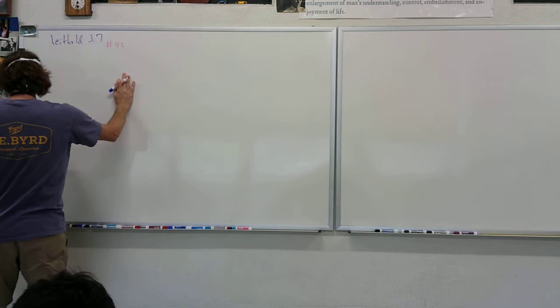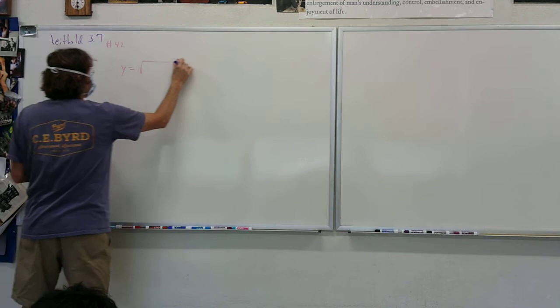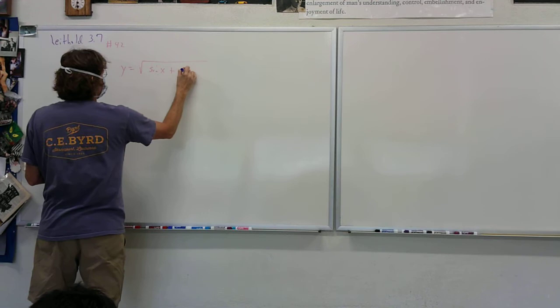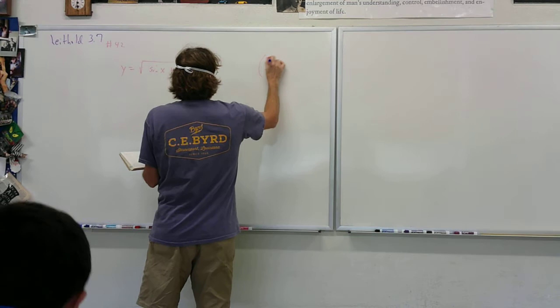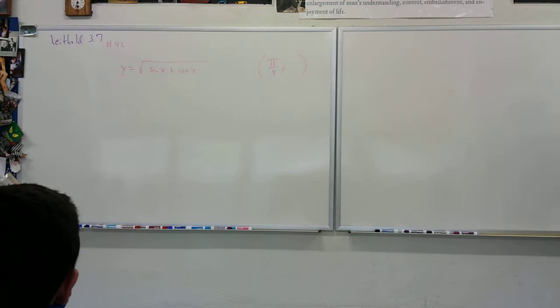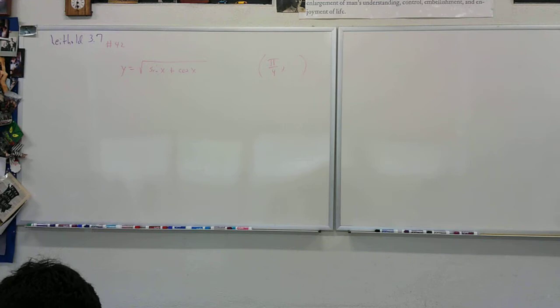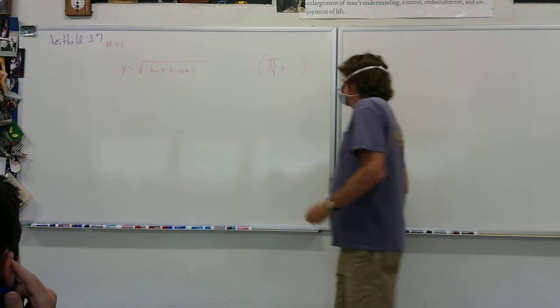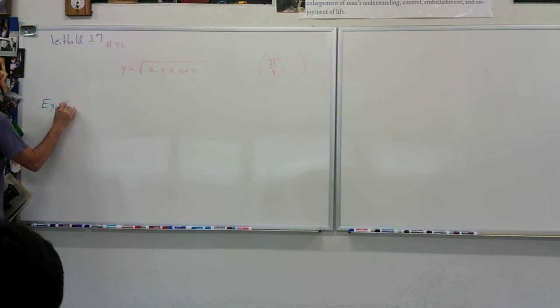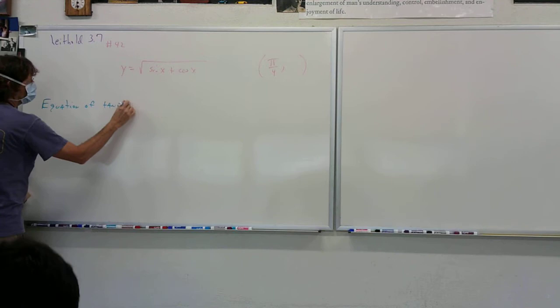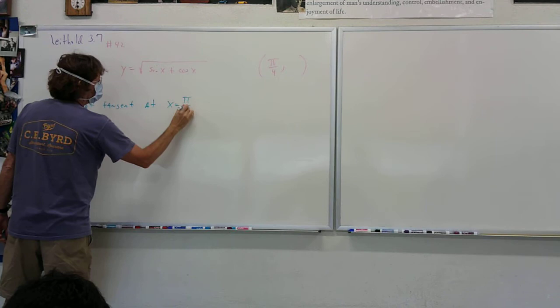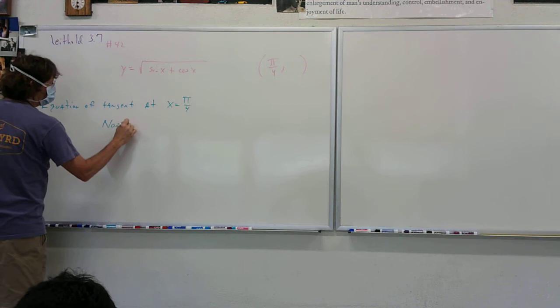I have the equation y equals the square root of sine x plus cosine x, and I have the x value of pi over 4. That's the information given to you. We want this to be a point on the curve, so we're going to need to find a y value so that pi over 4 is on the curve. I want you to write an equation of the tangent at x equals pi over 4, and then write an equation of the normal at that point.